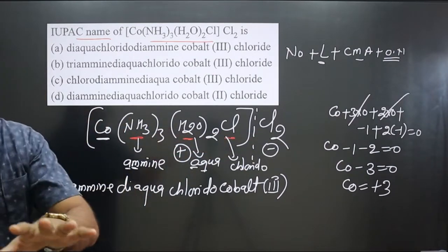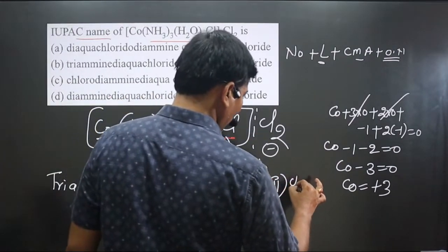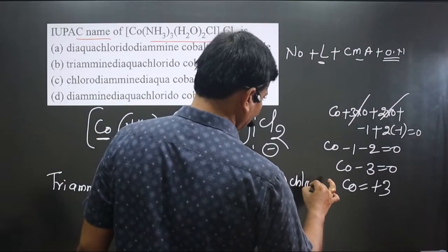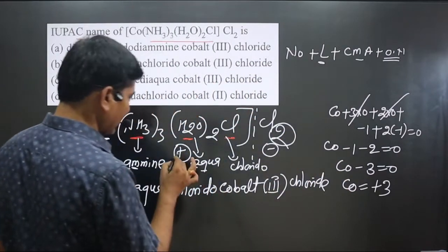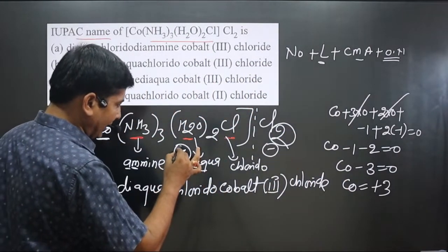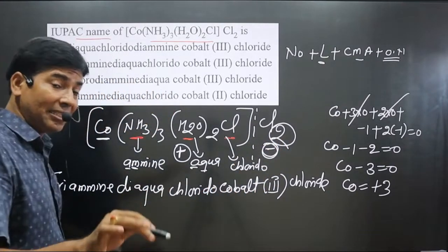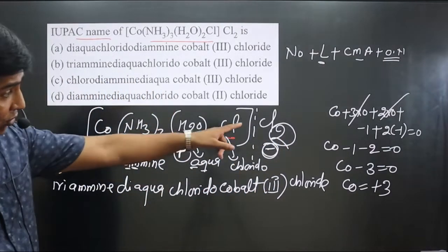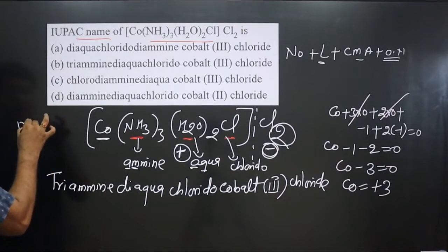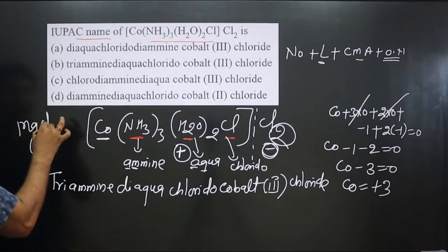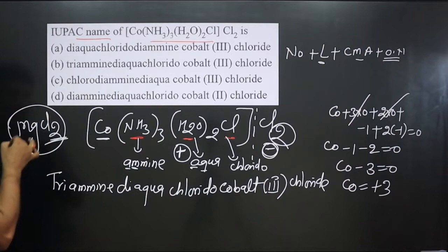The counter ion Cl₂ is named simply as 'chloride'. We do not say 'dichloride' because the subscript 2 arises from balancing the charge of the cationic and anionic parts — just as magnesium chloride is not called magnesium dichloride even though the formula is MgCl₂.